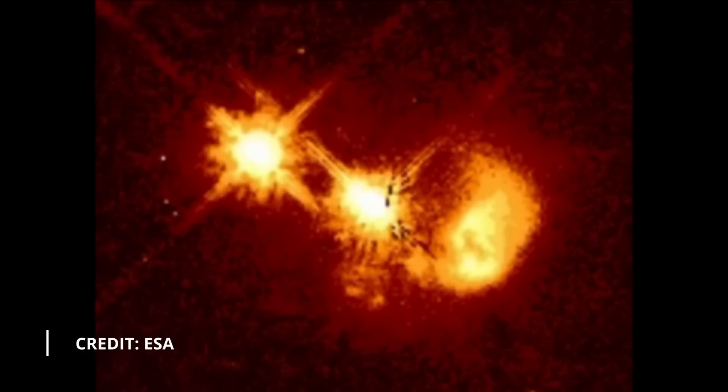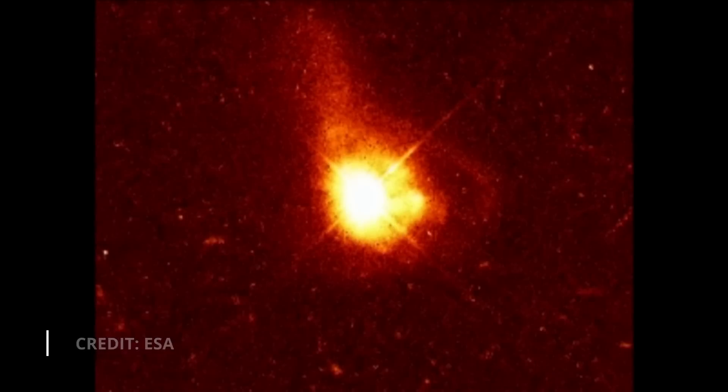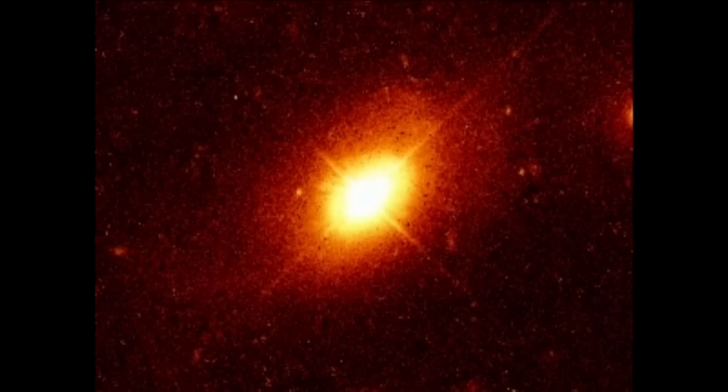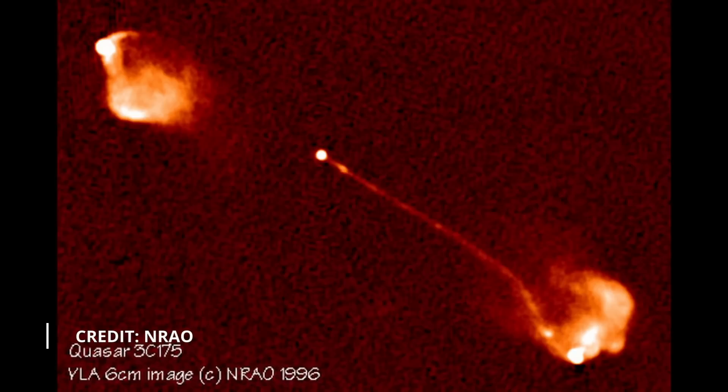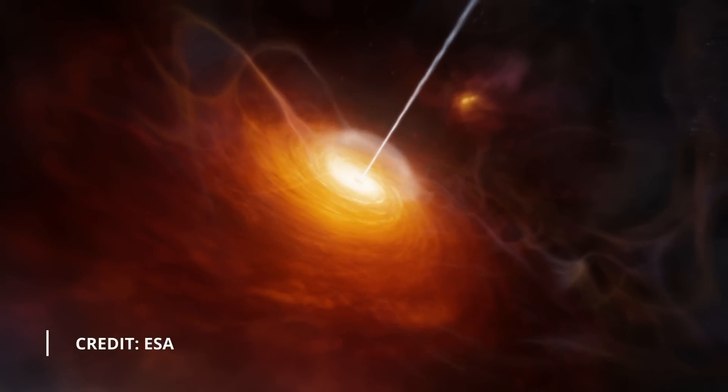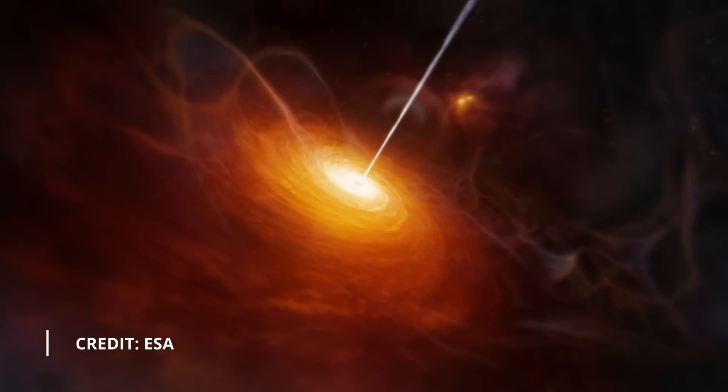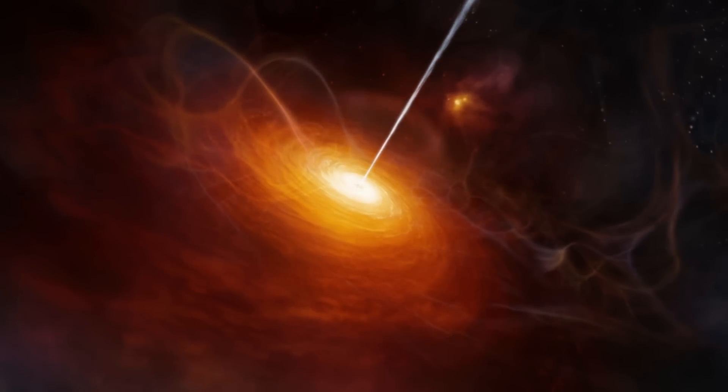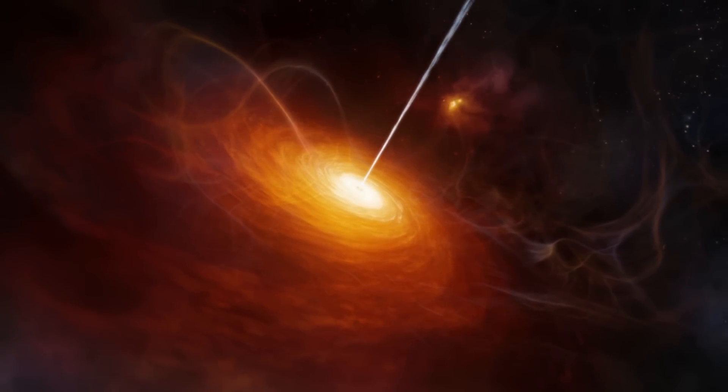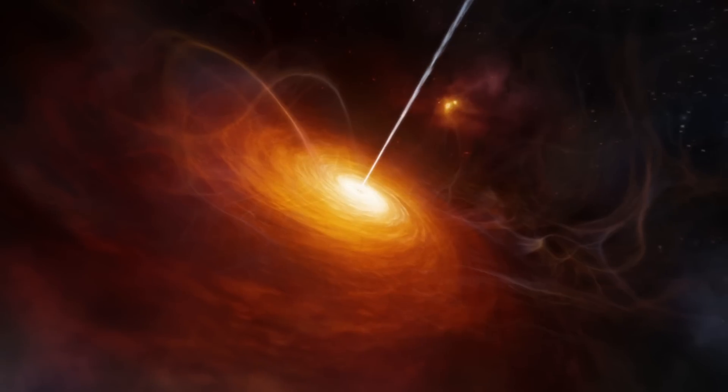Quasars were initially identified as objects with extremely high luminosity and significant redshift. In recent years we have observed long jets extending outwards from these objects. Current scientific thinking describes quasars as ancient relics from the early universe, similar to active galactic nuclei found at the centres of galaxies, including our own.